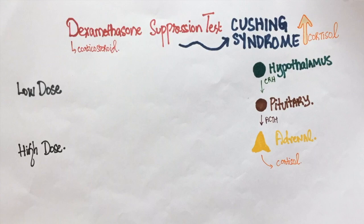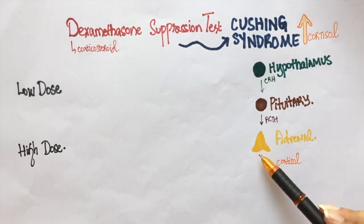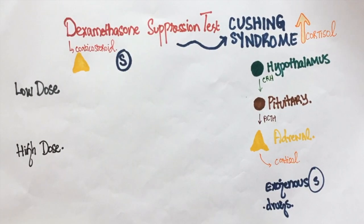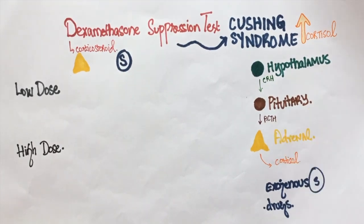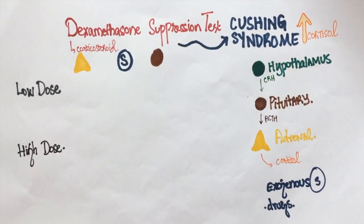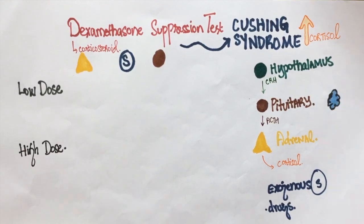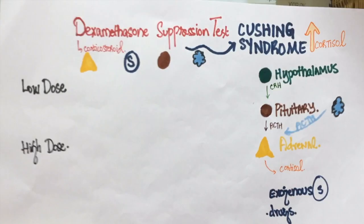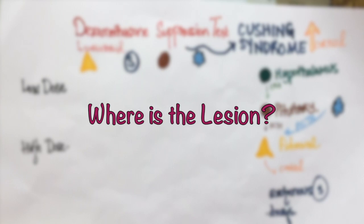This could either be due to an excessive cortisol production by the adrenals, consumption of exogenous steroids, excessive ACTH production by the pituitary, or due to ectopic ACTH production, as seen in some malignancies. The dexamethasone suppression test will help us find the most likely cause.